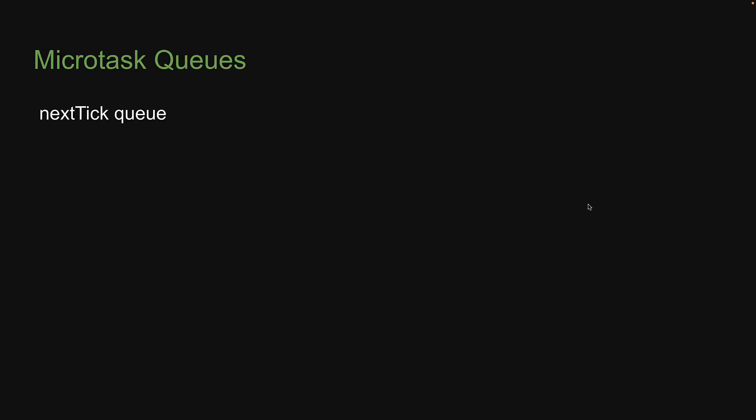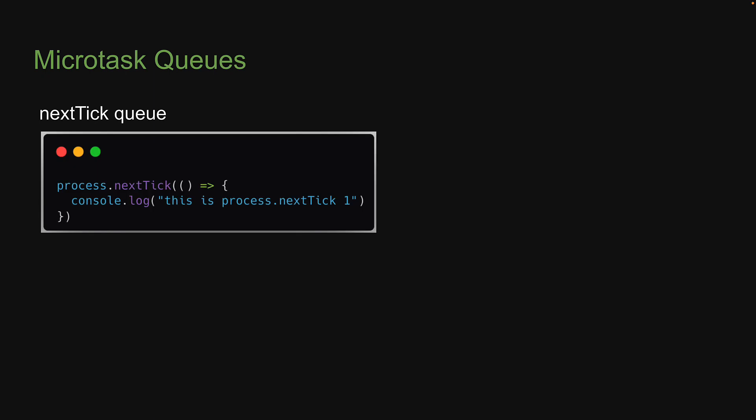To queue a callback function into the nextTick queue, we use the built-in process.nextTick method. The syntax is as follows: process.nextTick, and this accepts a callback function.